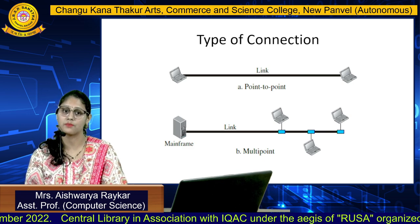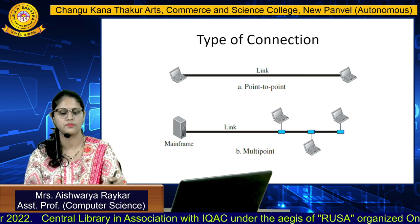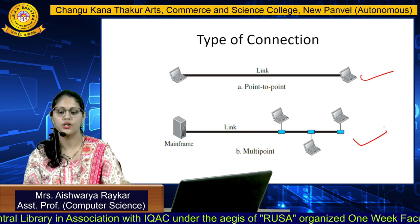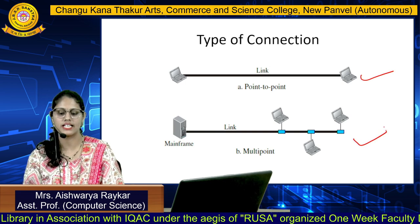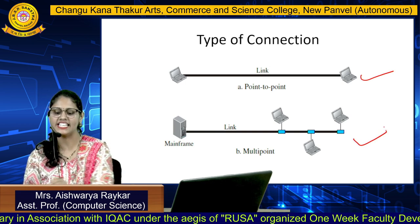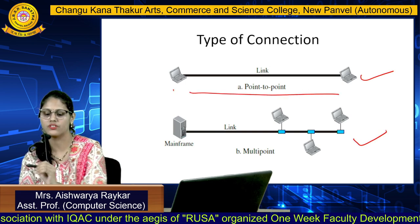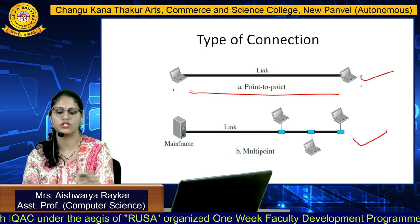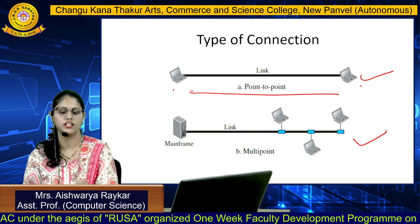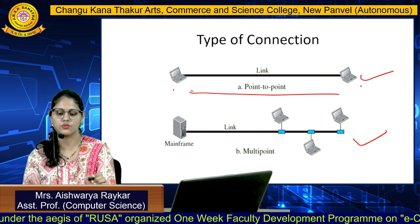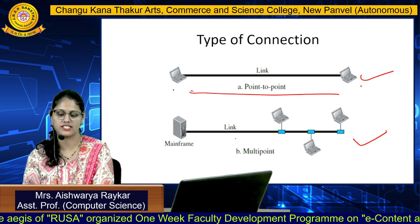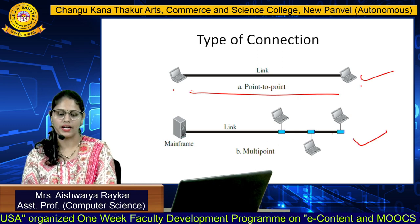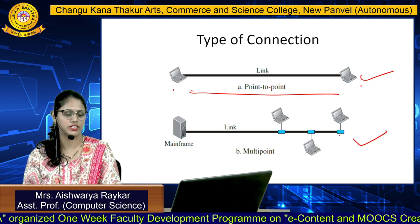Let's have a look at the types of connection. There are two: point-to-point and multipoint. Point-to-point means there will be a dedicated link — only two devices are there and this link is shared by these two devices only. In multipoint, as we can see, the link is shared by multiple devices.